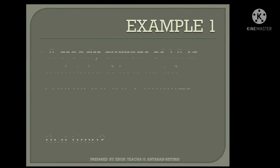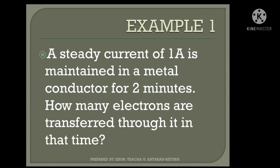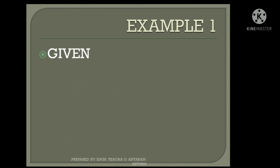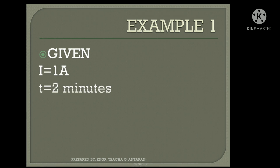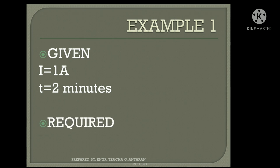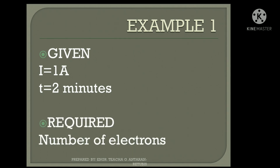Example number one: a steady current of 1 ampere is maintained in a metal conductor for 2 minutes. How many electrons are transferred through it in that time? We are given the current, which is 1 ampere, and the time, which is 2 minutes. We are required to solve for the number of electrons.